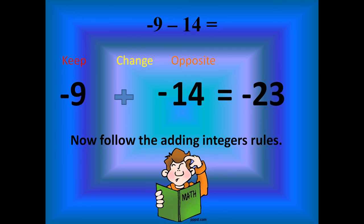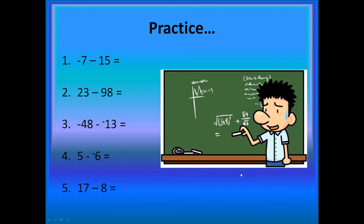You just do keep, change, opposite. Okay. I want you to practice. I know, we just barely learned the rule and I'm making you practice by yourself. I want you to pause the video. I want you to do five problems. Don't forget keep, change, opposite. Write your work down. And then when you're done with five problems, come back. We'll talk about the answers. Seriously. Pause the video.